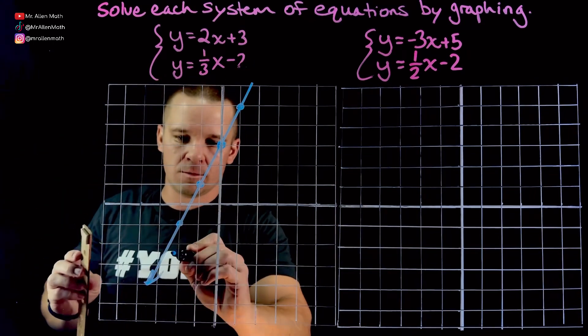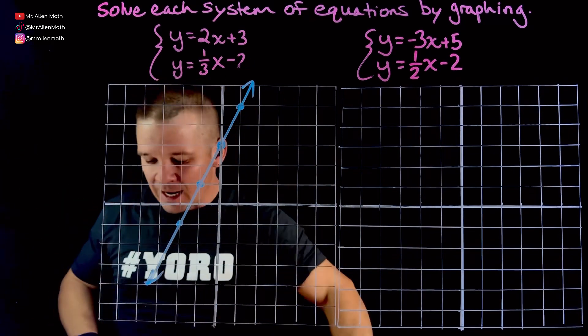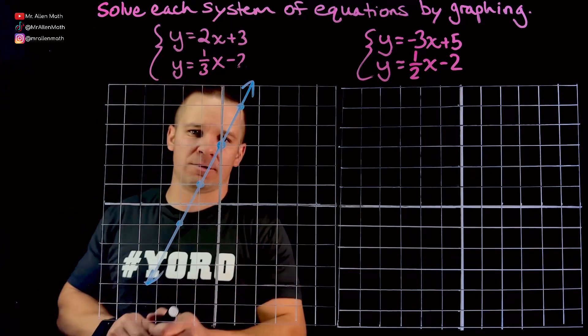Now, one thing to note there is I went negative, negative, which is positive. All right, I'm going to connect these. Do I have a straight edge? Oh, I do. Excellent. Make it nice, real nice.